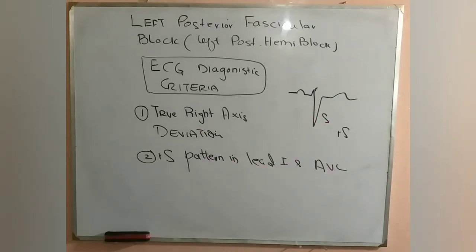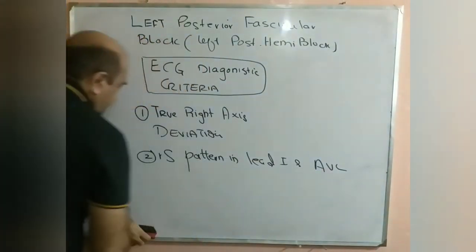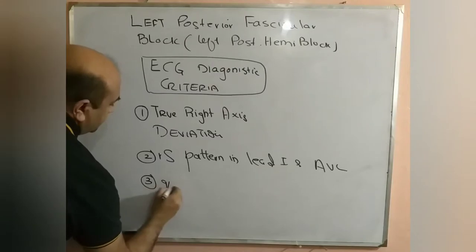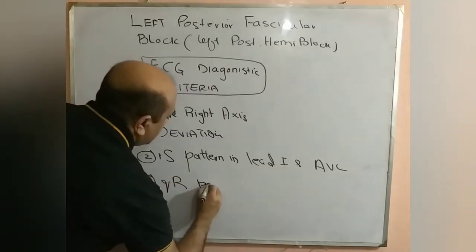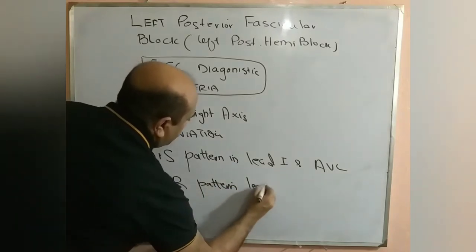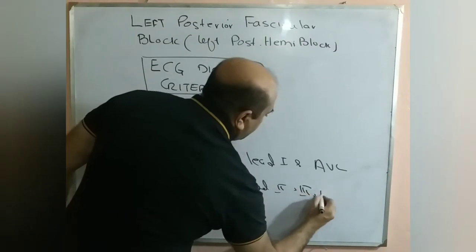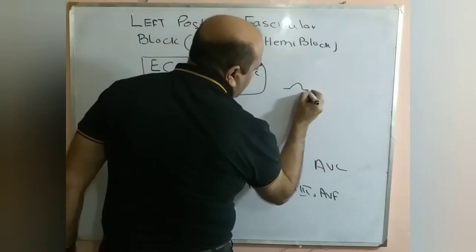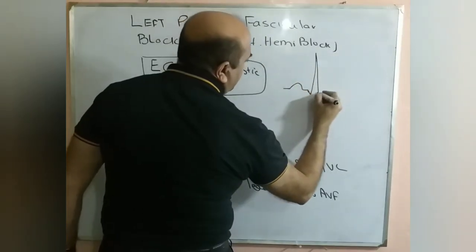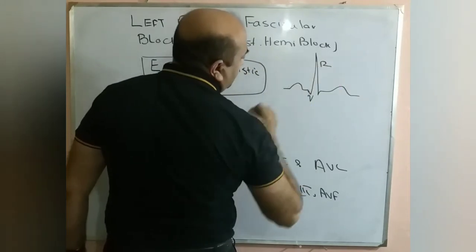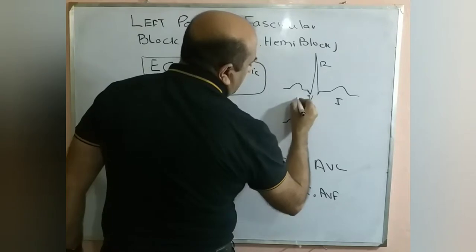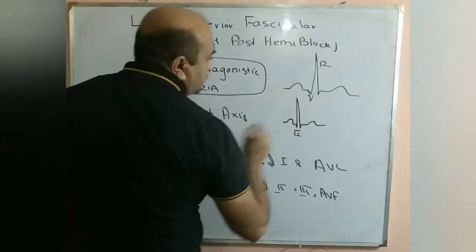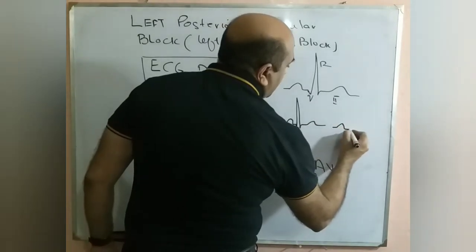Third condition: there should be a QR pattern in lead 2, 3, and AVF — meaning a small Q wave (physiological Q wave) and a tall R wave in those leads.